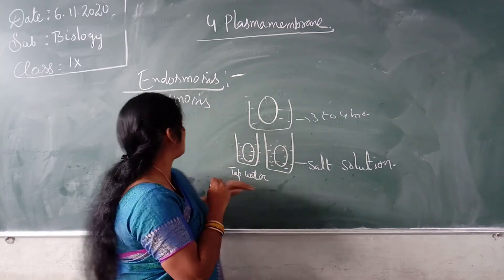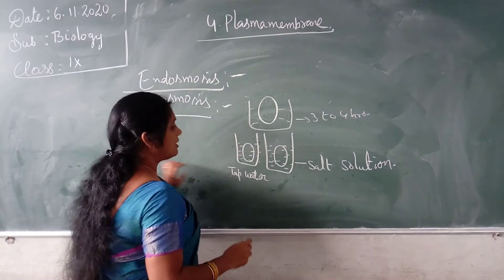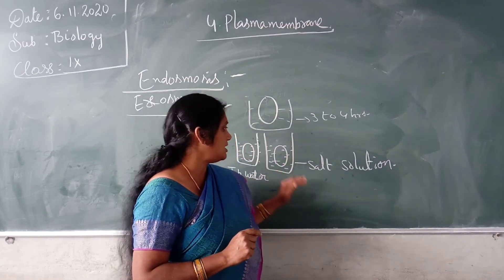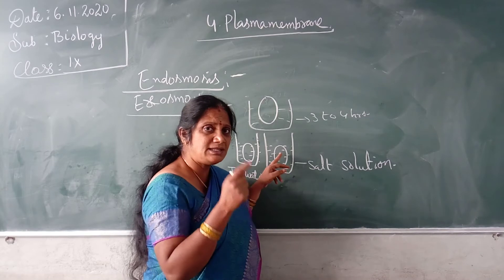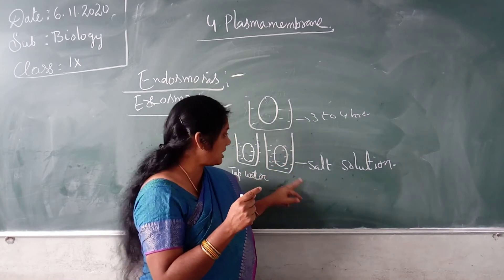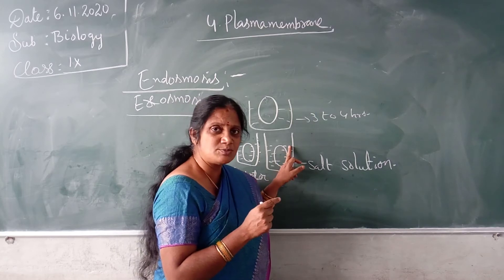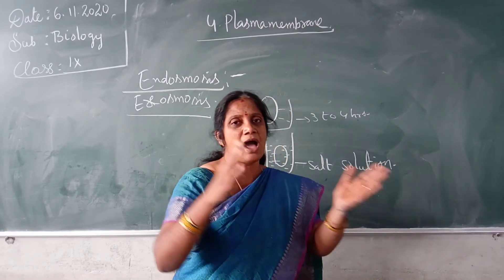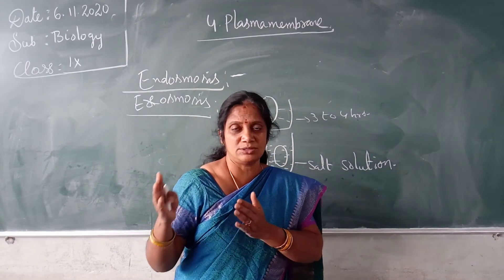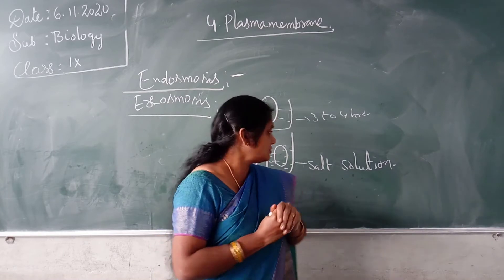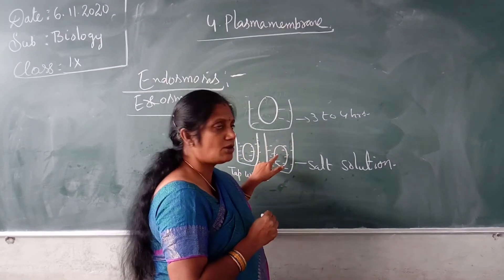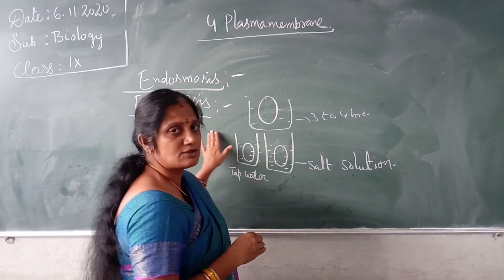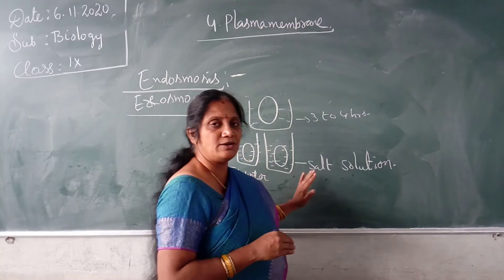The next condition is called exosmosis — meaning the water leaves the cell and enters to the outside. Here the water inside the cell comes out because there is a salt solution outside. The condition of osmosis is the movement of water molecules from a lower solute concentration region to a higher solute concentration region until the concentration becomes equal. So this is the higher solute region and this is the lower solute region, so the water from the egg comes out. This is called exosmosis.